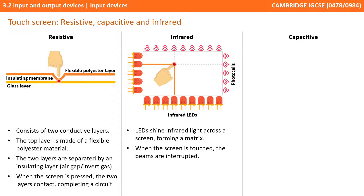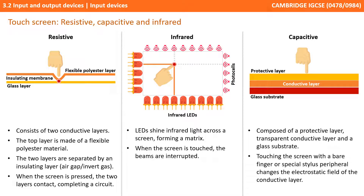Capacitive touch screens are composed of a protective layer, a transparent conductive layer, and a glass substrate. Touching the screen with a bare finger or a special stylus changes the electrostatic field of the conductive layer, and the point where this occurs is the point where the screen has been touched.